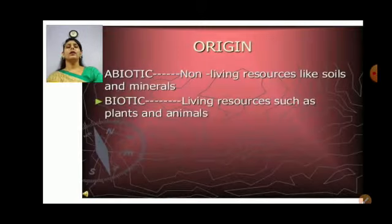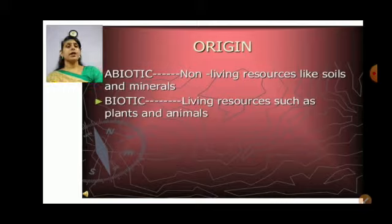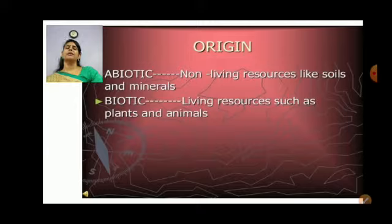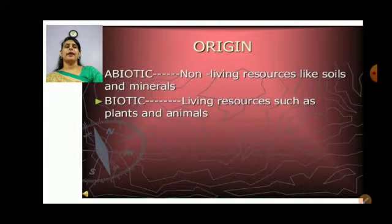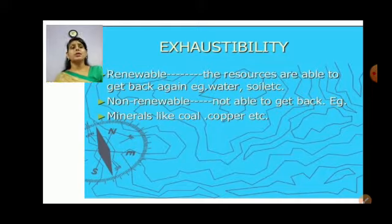Now we are talking about the origin of resources. It comes under abiotic and biotic. Non-living resources like soils and minerals come under abiotic resources. Biotic resources are living resources such as plants and animals. Now talking about the exhaustibility of resources.